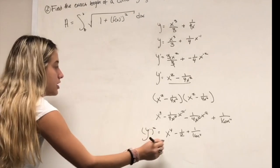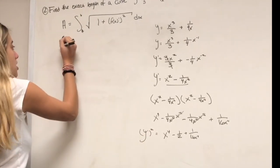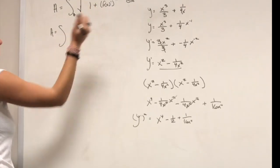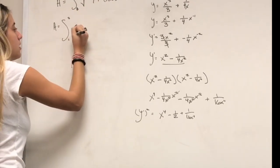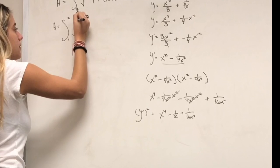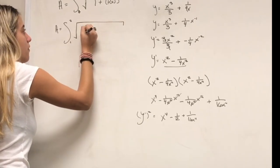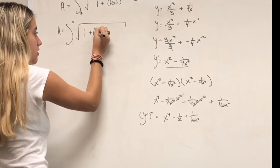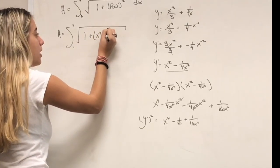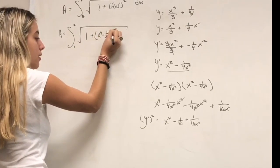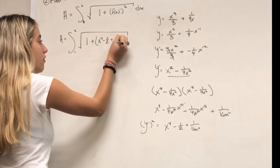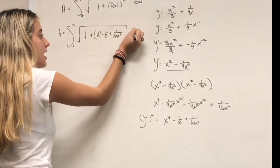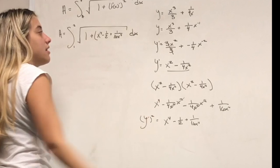Plug into the formula: arc length equals the integral from 1 to 2 of the square root of 1 + x⁴ − 1/2 + 1/(16x⁴) dx. That is the answer for question 2.